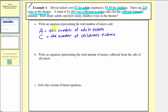To write the equation representing the total number of tickets sold, the key information is that there are 218 seats in the theater and it was sold out, so there had to be 218 tickets sold. Our first equation is: A plus C equals 218.